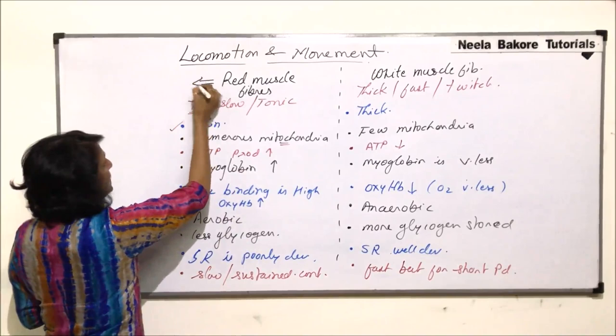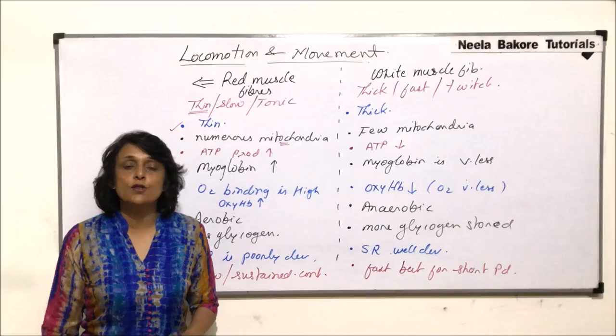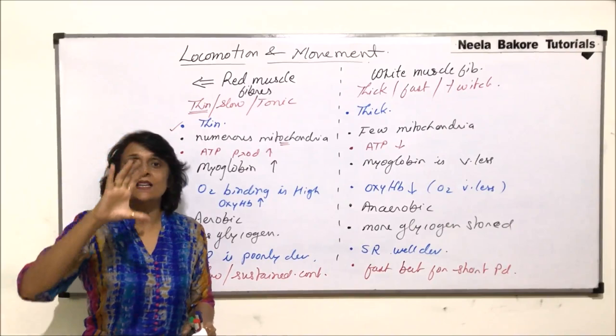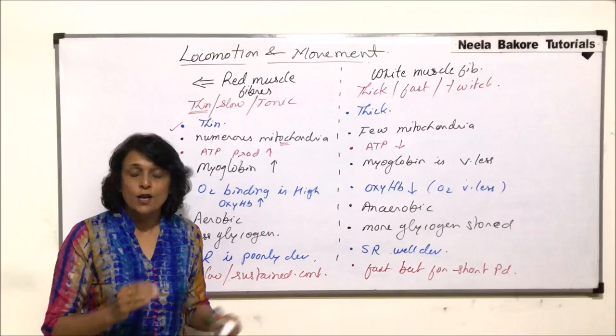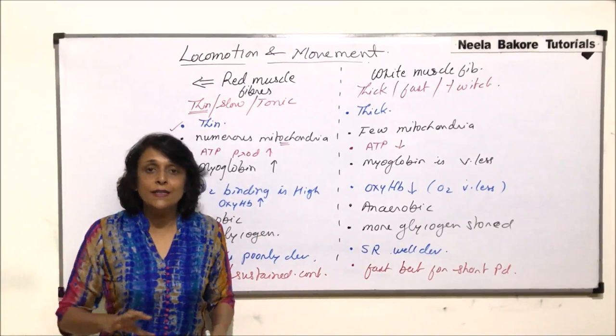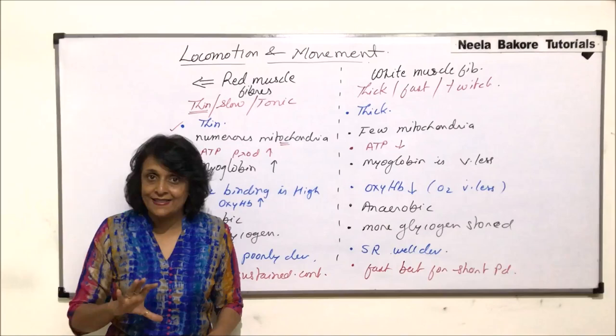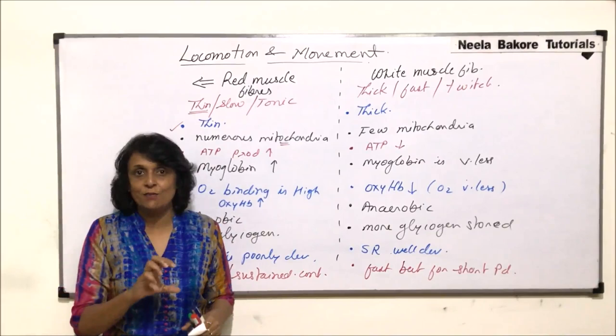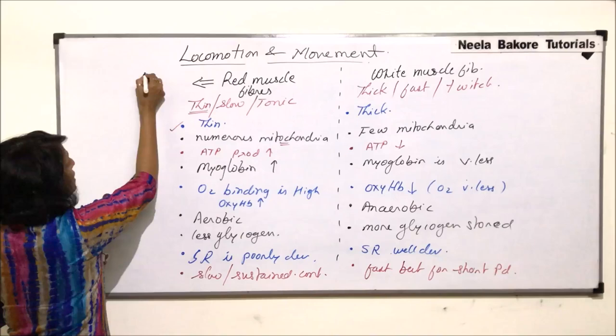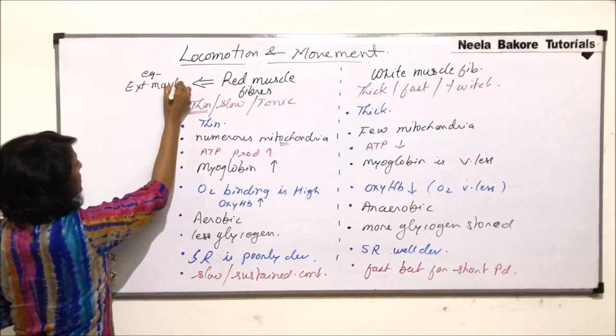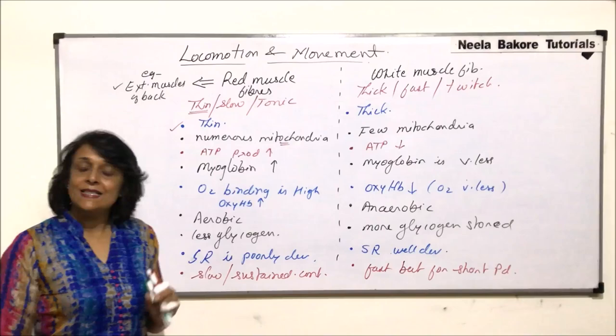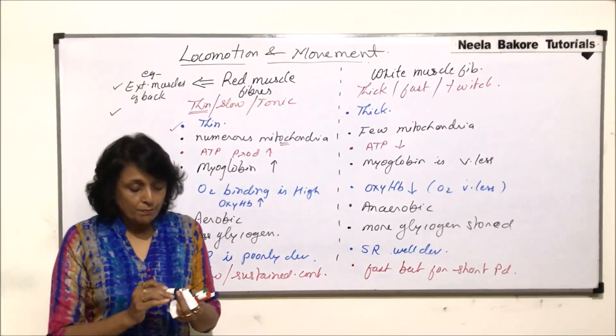For red muscle fibers, an example is the extensor muscles of our back. These muscles remain in a contracted state whenever we are sitting or standing throughout the day. The contraction period is slow — it is not a very tight contraction, but it is sustained for a long period of time. So the extensor muscles of the back are a classic example of red muscle fibers.